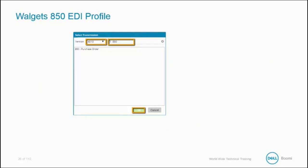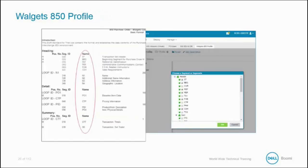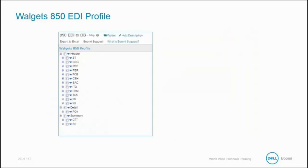To select the transmission, use the drop-down to select version 4010, enter 850, click the search button, and it will retrieve it. Once retrieved, highlight the transmission and click OK. In the Data Elements section, you simply check off the segments contained in your spec — whether mandatory or optional — so you have access to them in your profile, and AtomSphere will automatically create the profile containing all data elements including all looping.